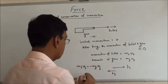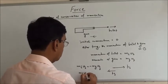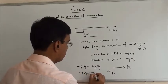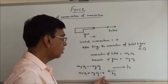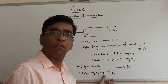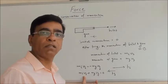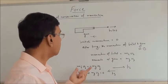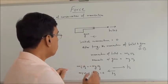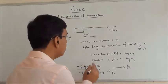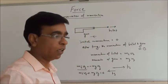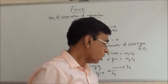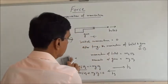Adding them gives zero — momentum before firing equals momentum after firing, which is zero. Whatever momentum the bullet has, the gun will have equal momentum in the opposite direction, so total momentum remains zero.